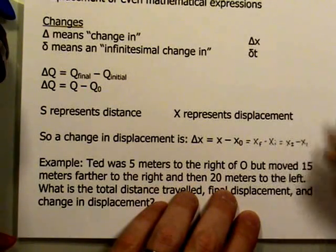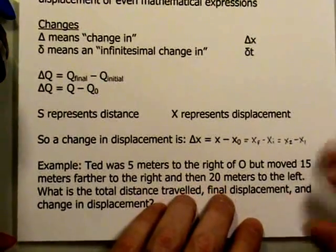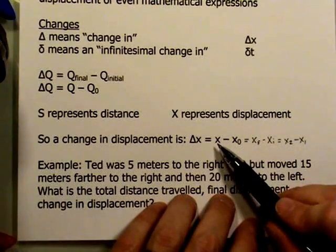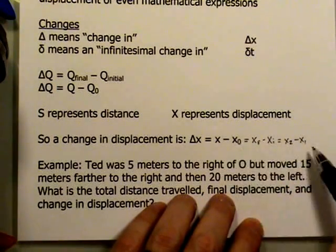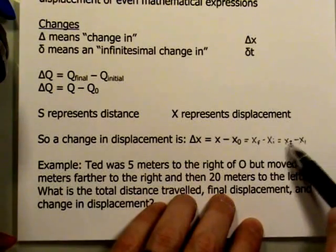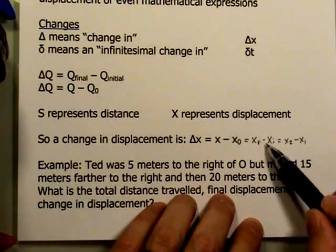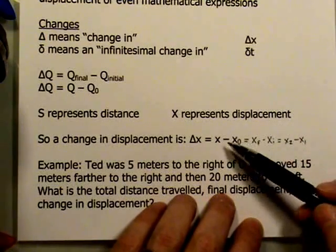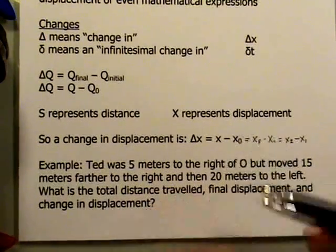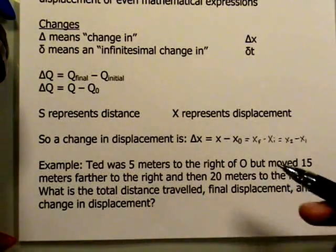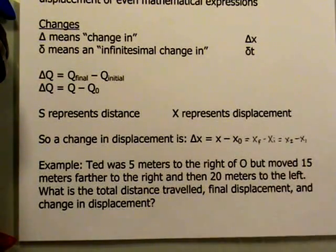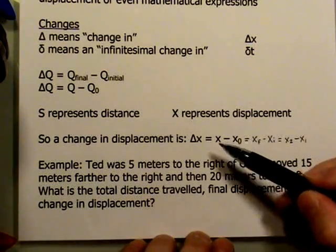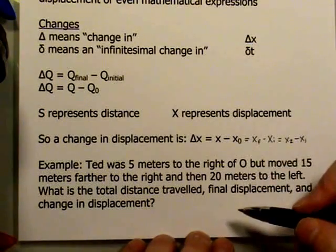Any one of these notations is perfectly acceptable — you would never be marked wrong for choosing one over another. Just don't mix them up: if you're using 1 and 2, stay consistent; if you're using initial and final, say XF minus XI. The reason we tend to leave the subscript off the final is that it gives flexibility to reevaluate the problem at different times or locations, since there may be different final positions or displacements.